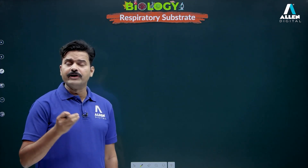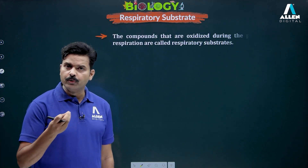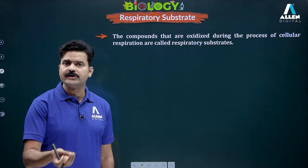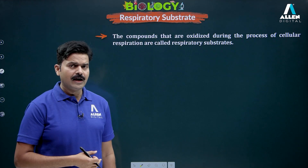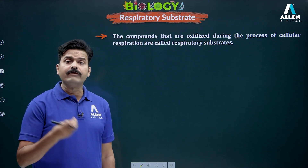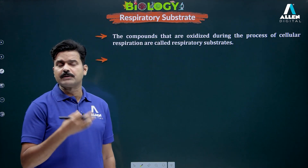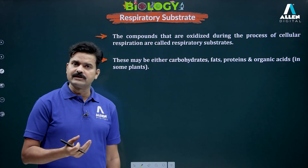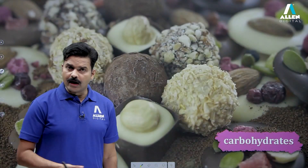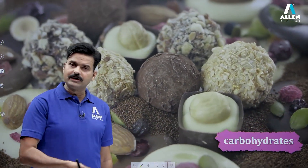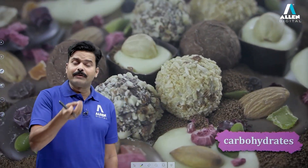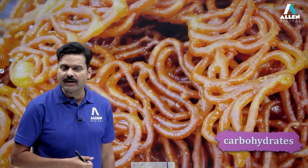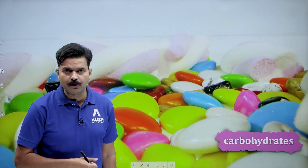Now, respiratory substrates are the substances which are broken down or oxidized during this process to release energy, and this energy is utilized for the synthesis of ATP. Which types of respiratory substrates are present? In our diet we have carbohydrates, proteins, and fats — and in some plants, organic acids are also used as respiratory substrates. If we eat potato, wheat, or rice, we are eating starch — meaning we are eating carbohydrates, which are abundantly present in our diet.